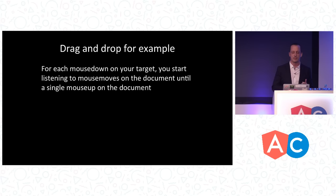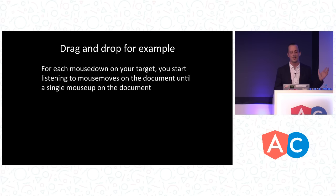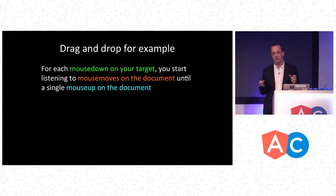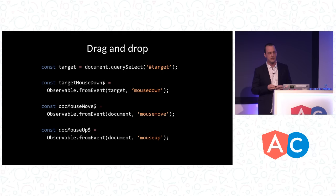You need to start viewing your events in terms of dependencies. Look at something like drag and drop. A drag and drop is basically: for each mouse down on some target, you start listening to mouse movements on the document until a single mouse up on the document. When you look through what you're doing here, you can identify three different sets of events that you have to compose together — these are dependencies to the one event you're trying to build: a single drag and drop event.